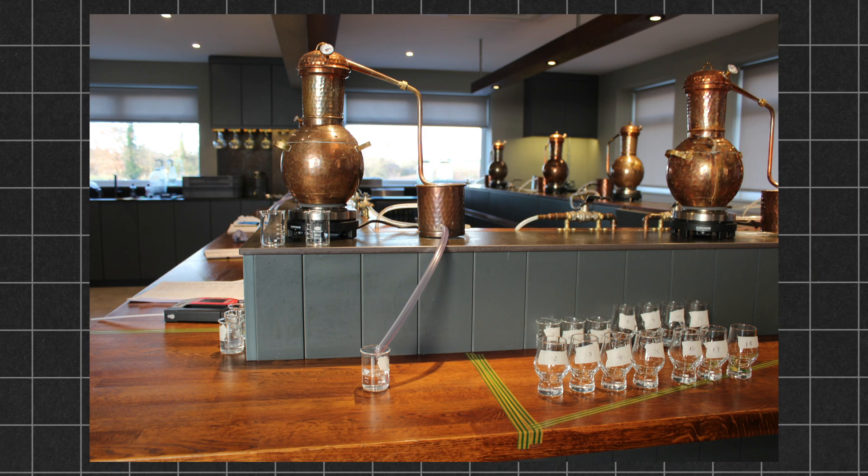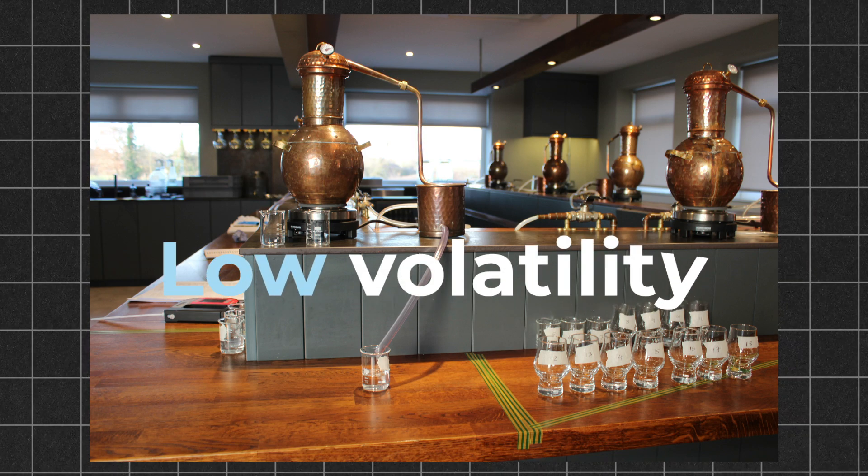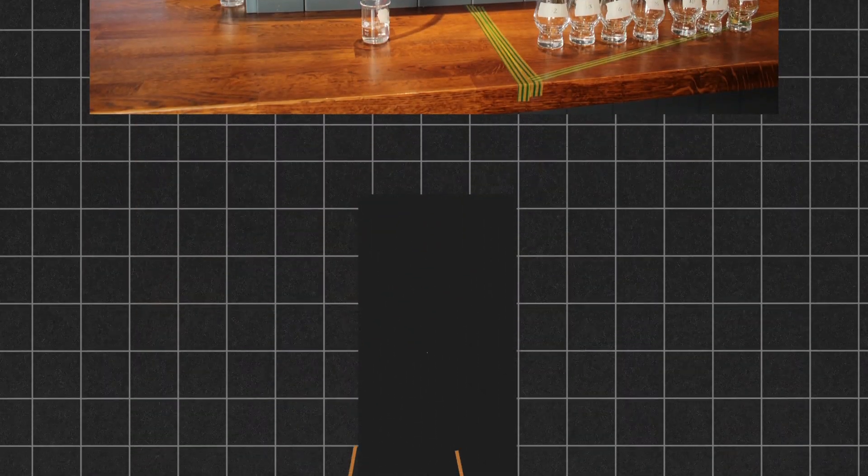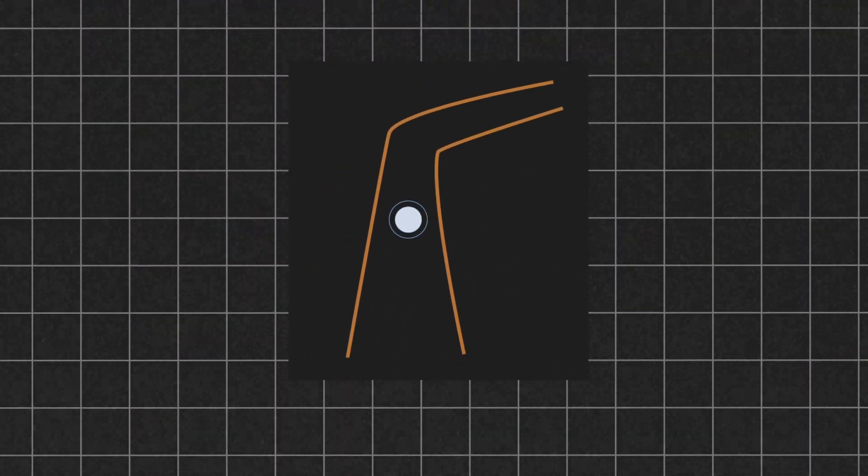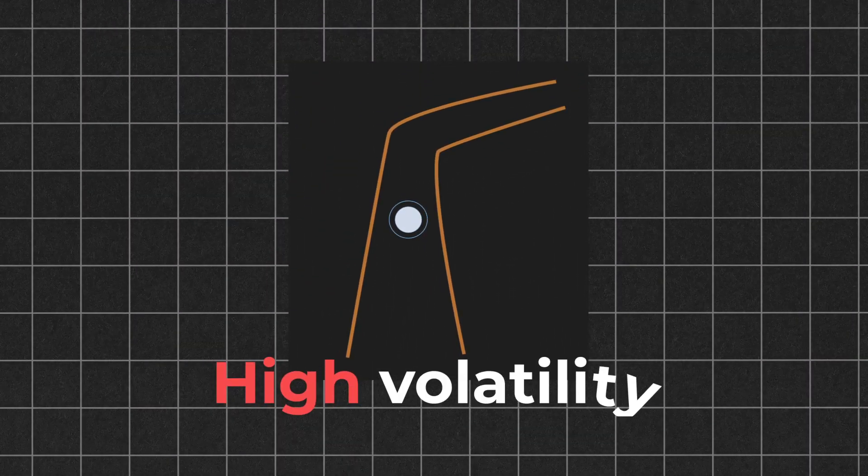For instance, if the lyne arm is tilting downwards, then we'll collect more low volatility components. Let me explain.